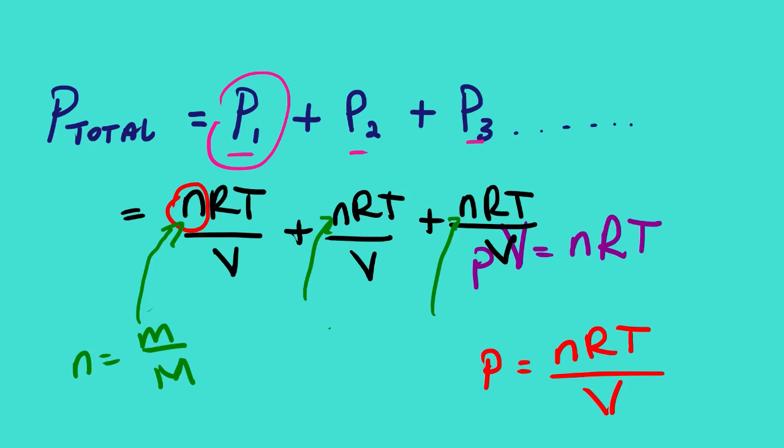It depends on the nature of the question. If you are given the number of moles and other information and required to calculate the total pressure, you expand the equation. If you are given the individual pressures, simply take their sum to get the total pressure. Sometimes you'll be given the total pressure and asked to calculate the partial pressure of a particular gas — substitute and solve for the unknown. These are the important equations you should know for partial pressure.